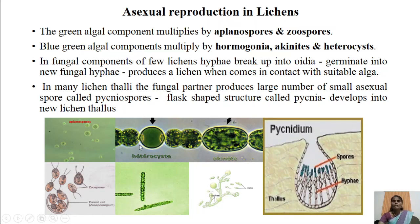In case of blue-green alga — a filamentous form like Nostoc or Anabaena — asexual reproduction occurs by hormogonia, akinetes, and heterocysts. Hormogonia are small filaments made up of a chain of cells. They usually form at the point of heterocysts.